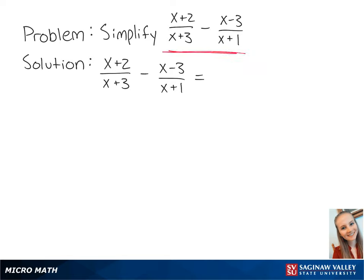Let's subtract these two rational expressions. First we want to find a common denominator. So we're going to multiply x plus 2 over x plus 3 by x plus 1 over x plus 1.